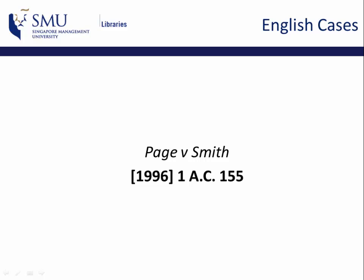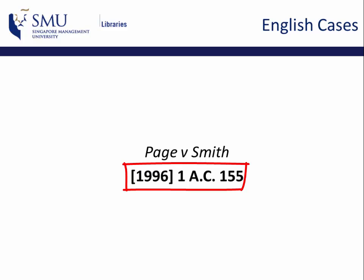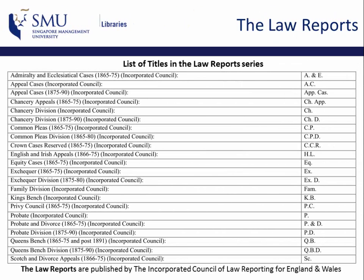Our last exercise is to find the English cases. You can tell that the names of the parties involved are Page and Smith. It was reported in 1996 in Volume 1 of AC, starting on page 155. What is AC? AC stands for Appeal Cases — it is one of the titles in the English Law Report series. So sometimes you may encounter AC, CH, or KB; they are all part of the Law Report series.